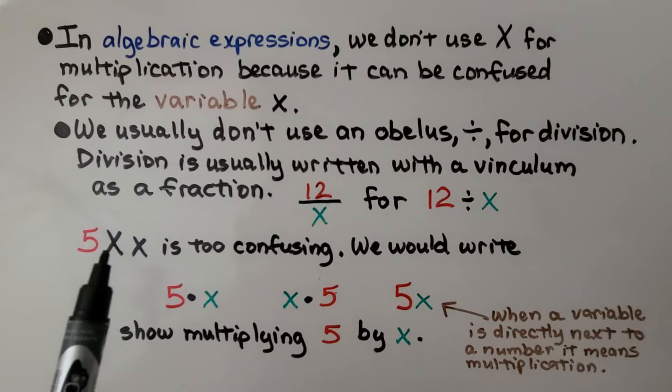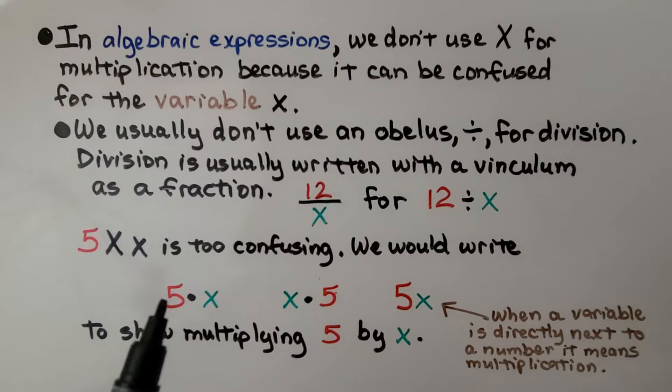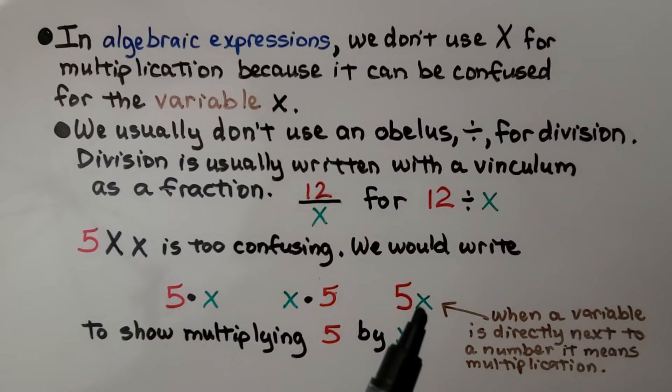So if we had a 5 with a big x and then an x, that's too confusing. We would write 5 with a dot x to show 5 times x or x times 5. We can multiply in any order. Or the 5 would be directly next to the x. When a variable is directly next to a number, it means multiplication. We can do this to show multiplying 5 by x.